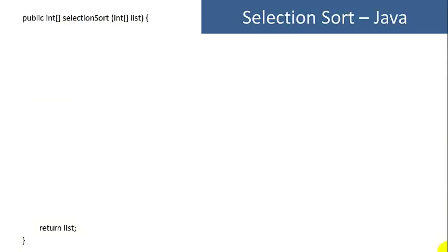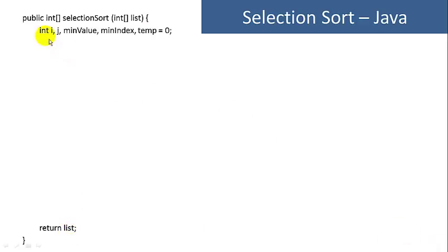Now let's write a method to do the selection sort. We'll start out with our method declaration: public, we're going to return an int array, and we're going to call this method selectionSort. We're going to accept an unsorted array of integers — we'll call this variable list — and then we're going to return the same list at the very end of the method. For variables, we're going to declare i as an outer loop variable, j for the inner loop, minValue, minIndex, and a temp variable for swapping.